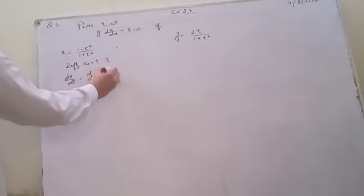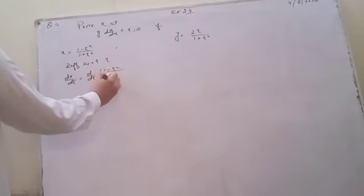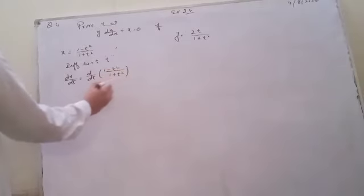These are parametric equations. We will use the chain rule for differentiating with respect to t. We find dx/dt as the derivative of (1 minus t square) over (1 plus t square).